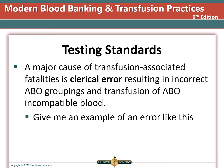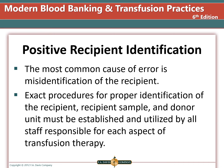Collecting blood and mislabeling it, recording test results in the wrong patient's record, and mixing up samples or mislabeling the tubes when testing are all examples. The most common error is misidentification of the recipient when collecting the blood samples. This is why there must be two separate blood types completed for each patient.